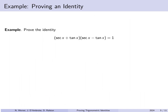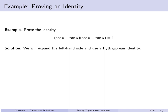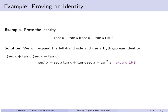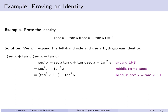Let's prove the identity that (secant x plus tangent x)(secant x minus tangent x) equals 1. We expand the left-hand side: secant squared x minus secant x tangent x plus tangent x secant x minus tangent squared x. The middle terms cancel, leaving secant squared x minus tangent squared x. Using the Pythagorean identity — secant squared x equals tangent squared x plus 1 — the tangent squared terms cancel and we simply have 1. We did not plug any value in for x; using known identities and algebraic steps we showed this is always equal to 1.